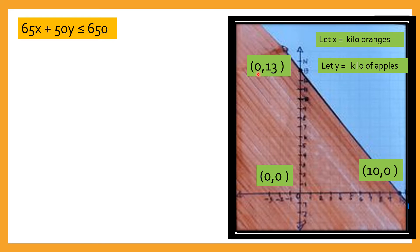So pag hindi ka bumili ng oranges, ibig sabihin ang kaya mong bilhin na kilos of apples are 13 kilos. Dito naman, pag hindi ka bibili ng apples, ibig sabihin mamaksimize mo yung pera mo — pwede kang bumili ng 10 kilos of oranges. Yun ang ibig sabihin ng ordered pair na yan.